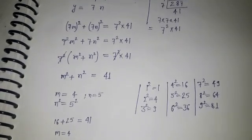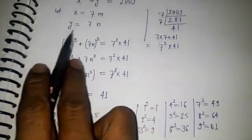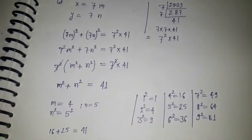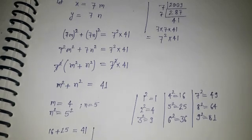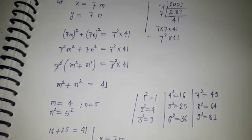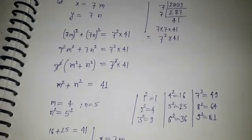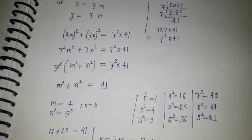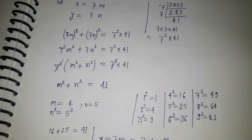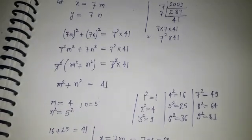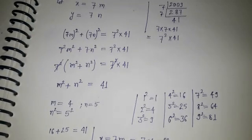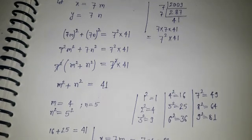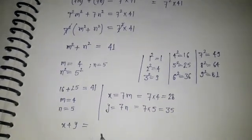We assumed x equals 7m and y equals 7n. So x equals 7 times 4, which is 28, and y equals 7 times 5, which is 35. Now we need to find x plus y: 28 plus 35 equals 63. So the sum of x and y is 63.